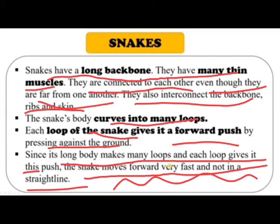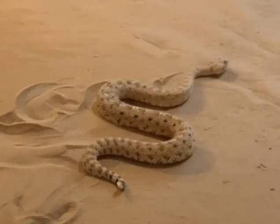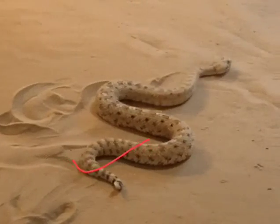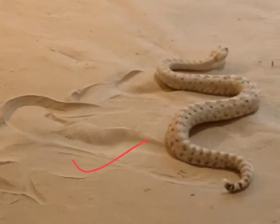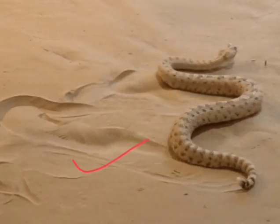Since the snake's long body makes many loops and each loop gives it a push, the snake moves forward very fast but never in a straight line. Snakes always move by forming loops, which provide a forward push by pressing against the ground.